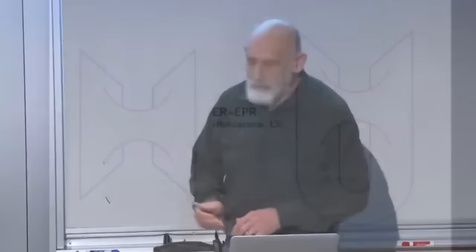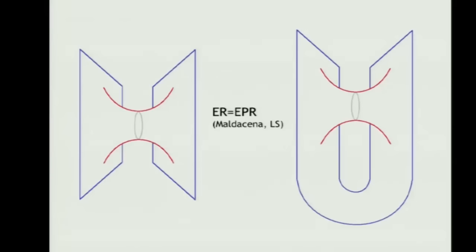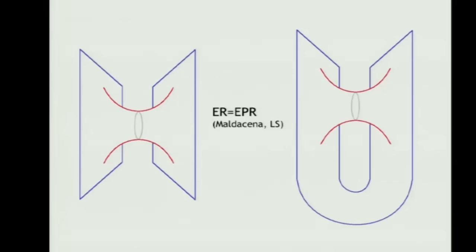That's called an Einstein-Rosen bridge. The equivalence of Einstein-Rosen bridges with entanglement has an acronym: ER, for Einstein-Rosen bridge, equals EPR, which stands for Einstein-Podolsky-Rosen—same Einstein, same Rosen. Curiously, the discovery of Einstein-Rosen bridges and the discovery of entanglement by Einstein were in the same year: 1935. ER equals EPR is a genuinely new and unexpected principle—a deep connection between quantum mechanics and general relativity, something much deeper than we had any idea about 10 years ago.